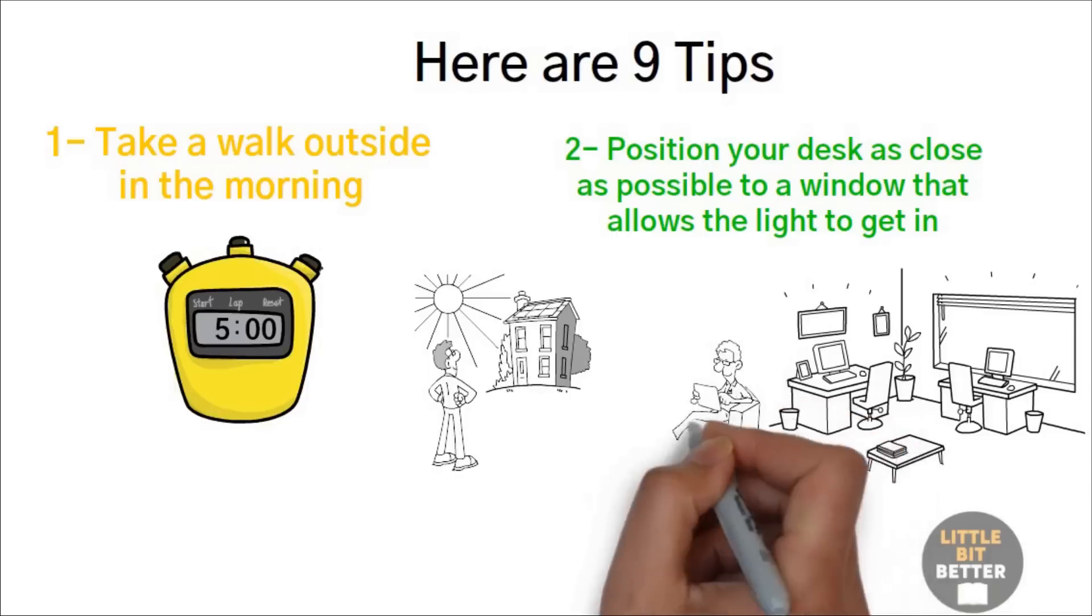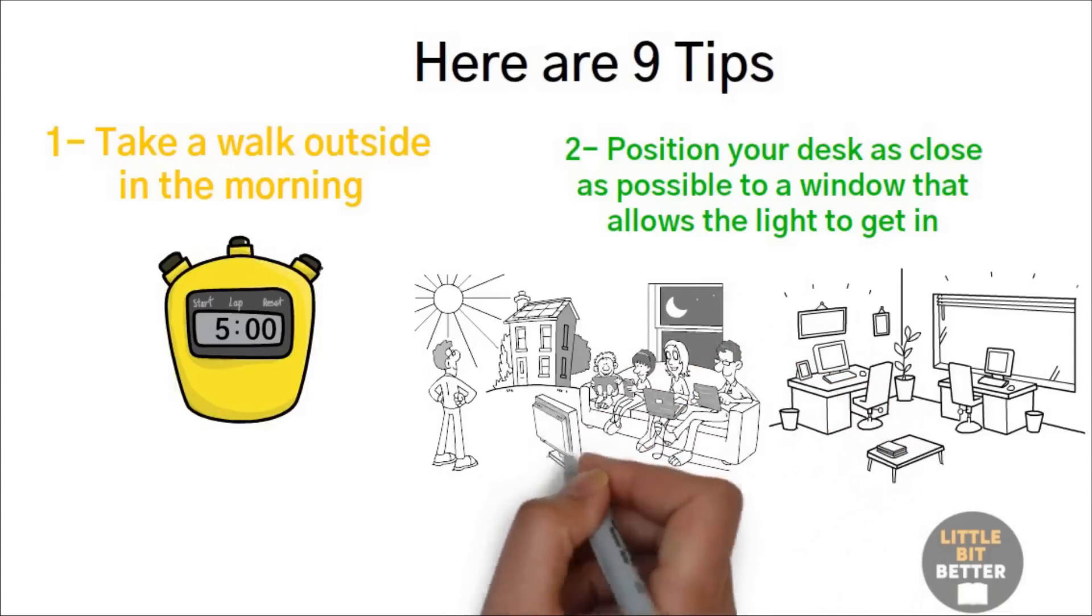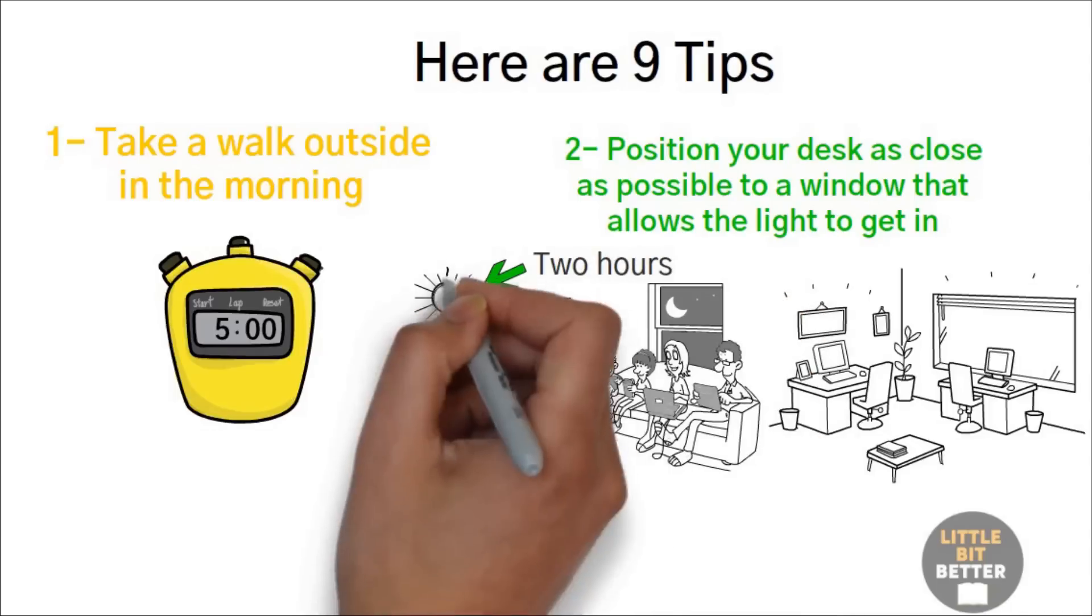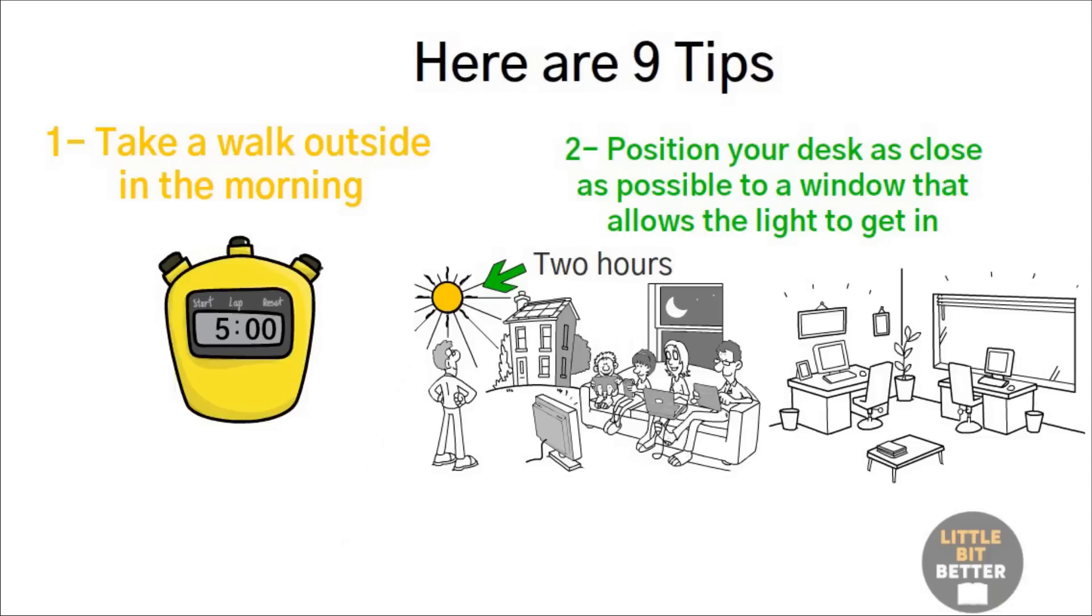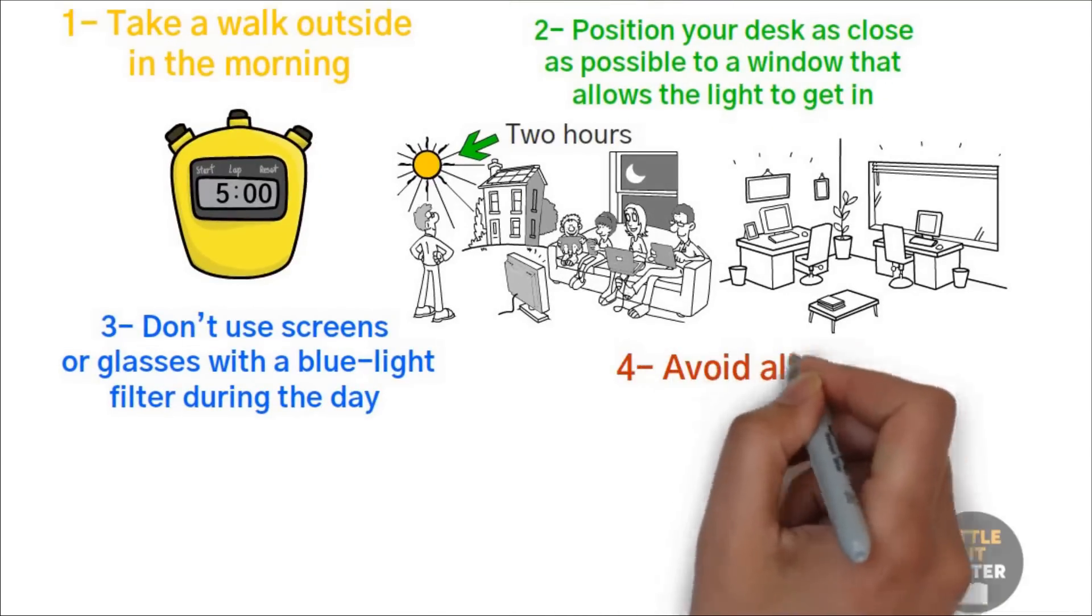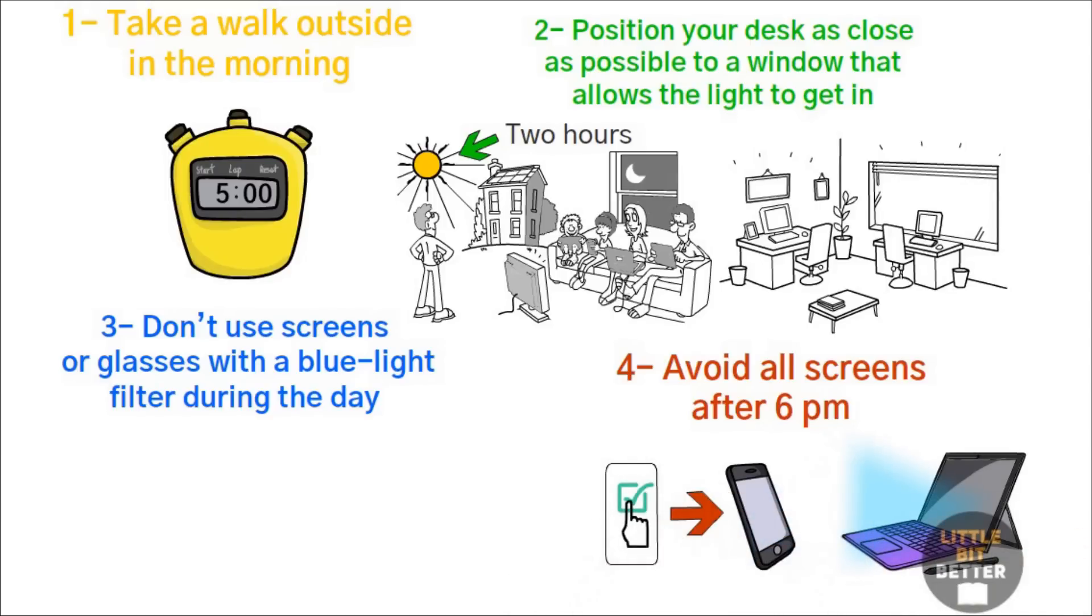Even architects have been taking this into consideration when designing buildings and houses. You don't have to stand in the daylight all day, but getting at least two hours of daylight exposure is essential for your health. Three, don't use screens or glasses with a blue light filter during the day. Four, avoid all screens after 6 p.m., but if you absolutely must use them, set them not to emit blue light. Most modern smartphones and computers have this function.